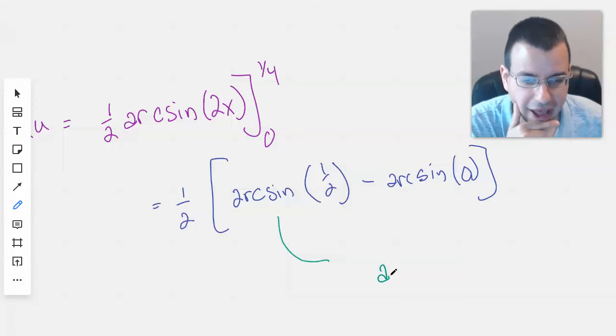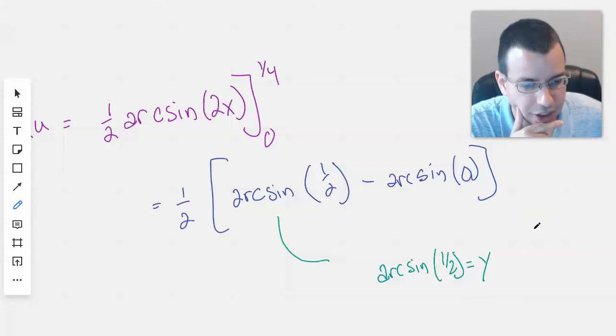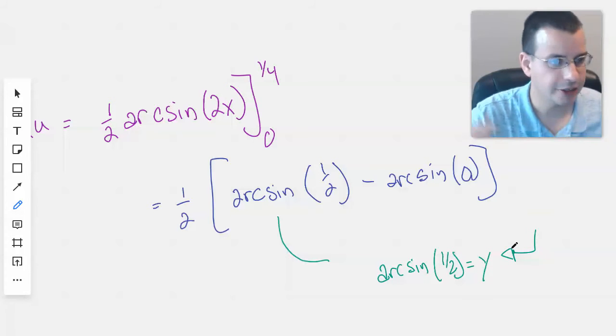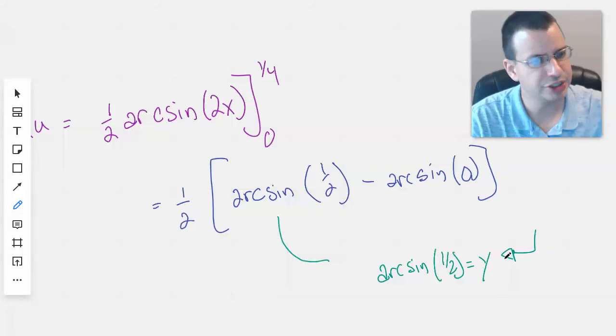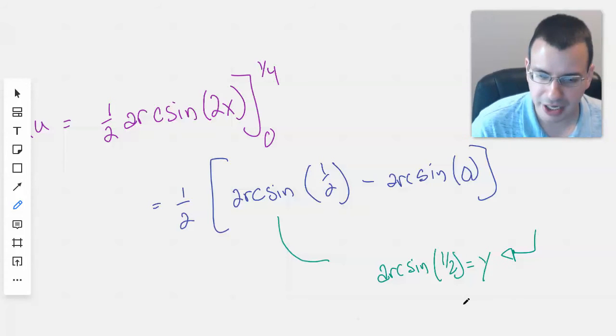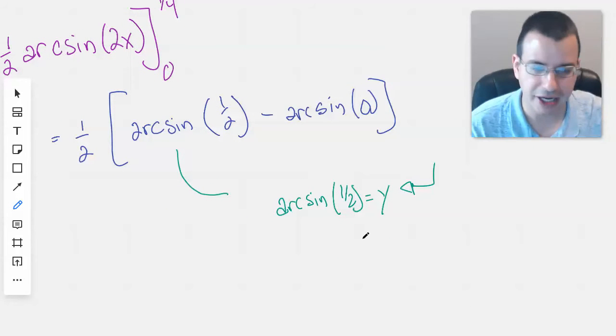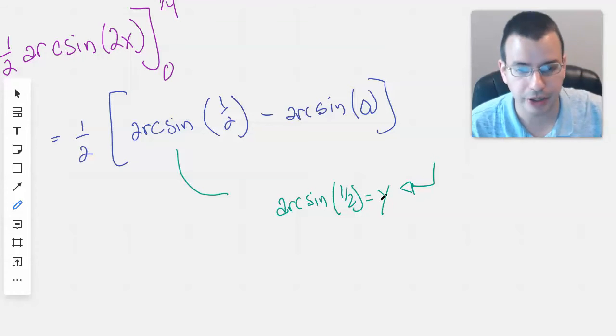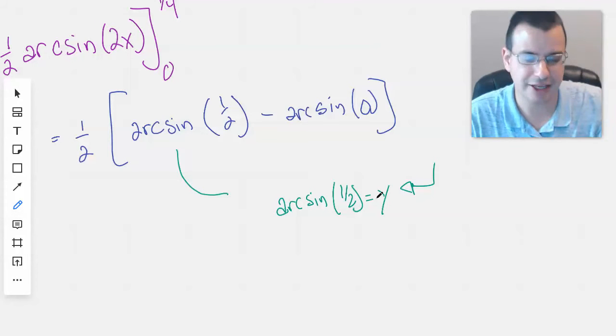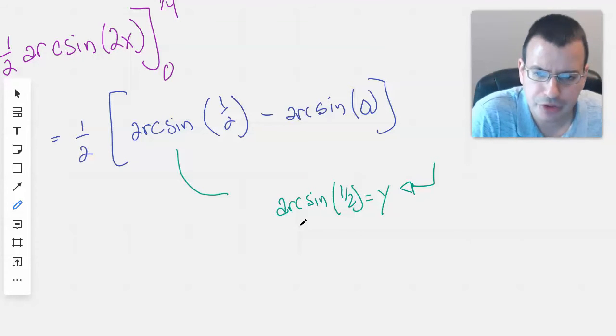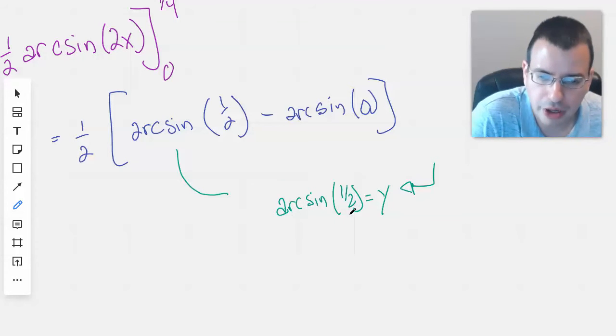So arc sine of one half, we'll say that arc sine of one half equals y. This y here, it's just there to help me think. So I can be like, okay, what is this y? Kind of like when you have a treasure map, you put the x there. That way, you're like, oh, that's my goal. So my goal here is to think about y. Okay, so arc sine of one half, what does y equal?